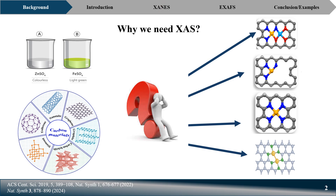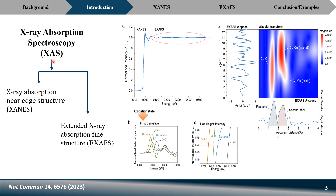XAS is X-ray Absorption Spectroscopy, categorized into two different categories: X-ray Absorption Near Edge Structure (XANES) and Extended X-ray Absorption Fine Structure (EXAFS). When you perform XAS, you obtain a graph where the left portion is named XANES and the rest is named EXAFS. In published papers, you will typically find two different plot types for the EXAFS portion.